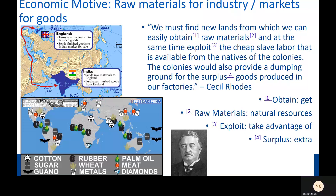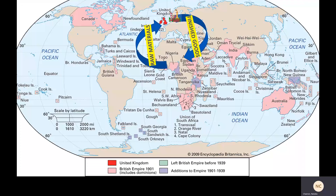Europeans of that time period were almost shockingly upfront about what they wanted and why. Take, for example, this quote by Cecil Rhodes, a famous British imperialist who led the takeover in southern Africa. He said: 'We must find new lands from which we can easily obtain raw materials and at the same time exploit the cheap slave labor that is available from the natives of the colonies. The colonies would also provide a dumping ground for the surplus goods produced in our factories.' It's pretty straightforward. They take over a place in Africa, extract raw materials, take those back to England, make stuff in factories, and then sell finished goods back to where they took the raw materials from.